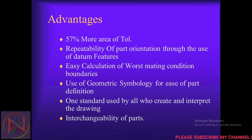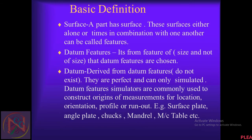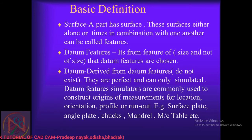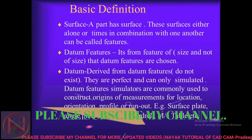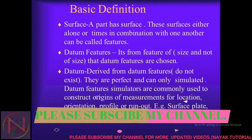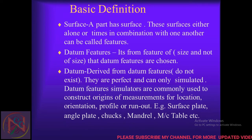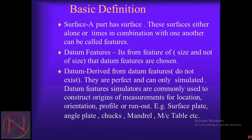A part has a surface; this surface, either alone or in combination with others, can be called features or datum features. It includes form features of size and not of size. Datum features are chosen; the datums derived from them do not physically exist — they are perfect and can only be simulated. Datum feature simulators include surface plates, angle plates, chucks, and machine tables.